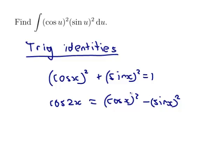There's this trick where I can replace the cos squared with the 1 minus sin squared from the one above. So I can get 1 minus 2 sin x squared or 2 cos x squared minus 1.